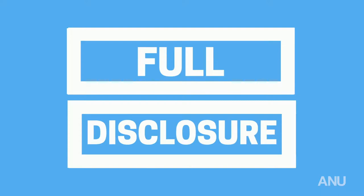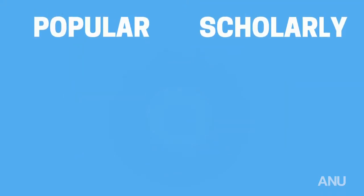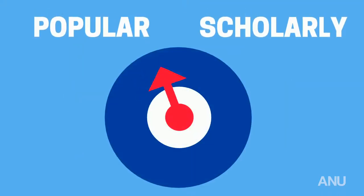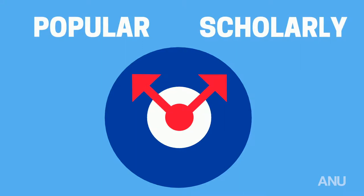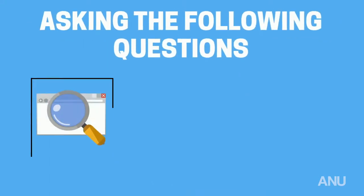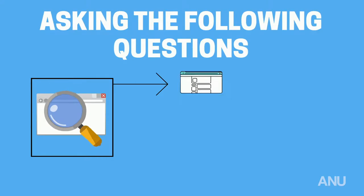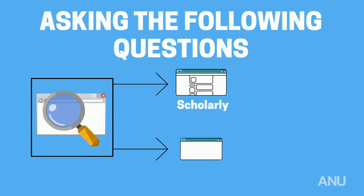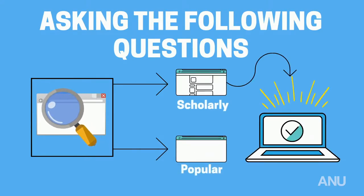Now, full disclosure — determining if the source is popular or scholarly is not always straightforward. There may be instances where an information source has some features of both a scholarly and a popular source. Asking the following questions can help you decide for yourself if what you are citing in your research is indeed scholarly.